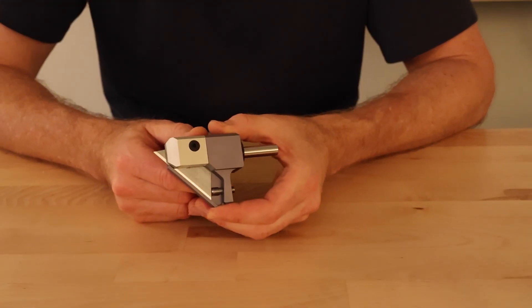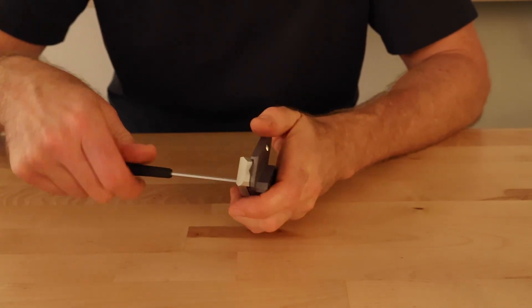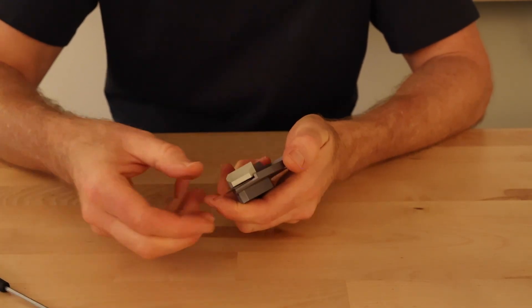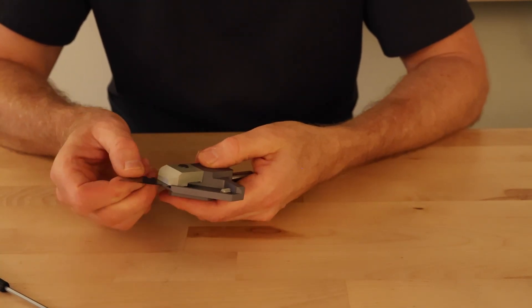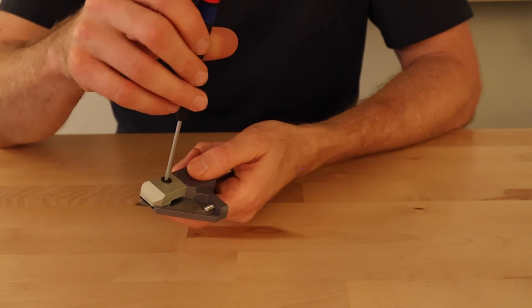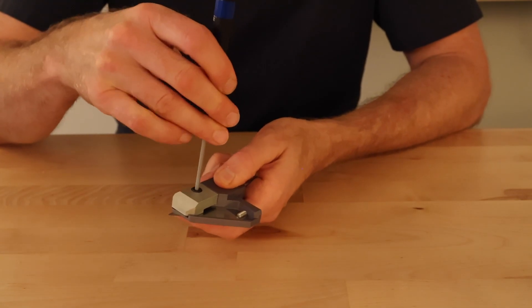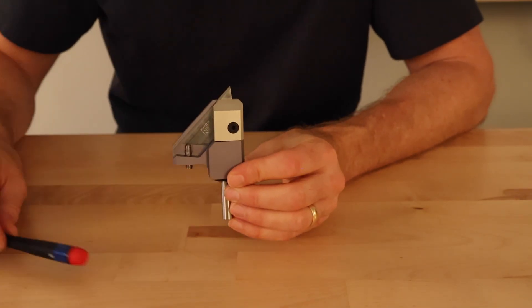For the adjustable version, the blade comes out the same way, 3mm hex key, and it comes right out. There is a set screw back here that will, when you put the new blade in, recall the position so you don't have to reset your offset, and your tool length offset should be the same when you put it back in.